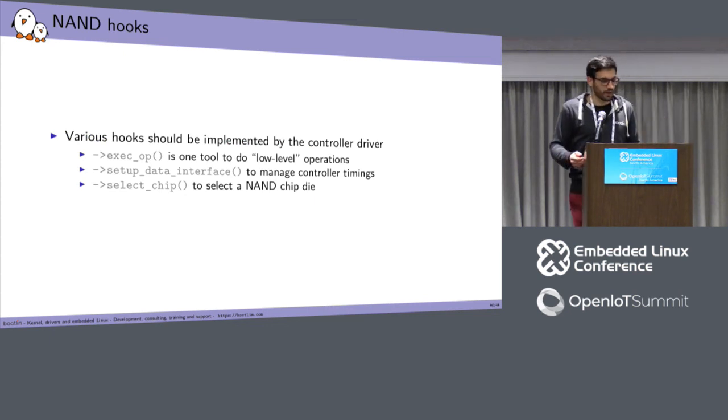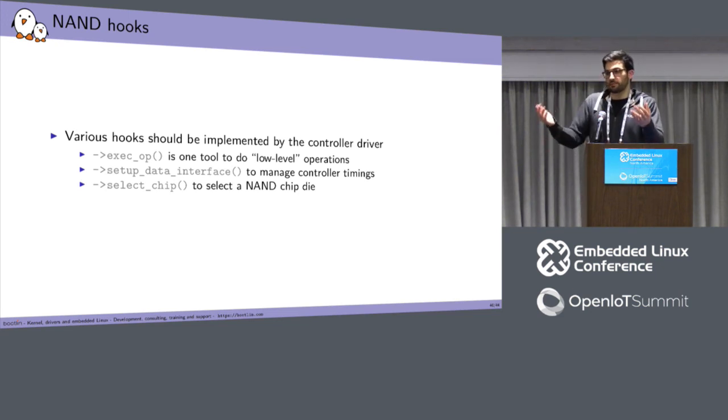So this is how execop is supposed to work. That's all for this interface, but I found it interesting to give you a bit more, at least two other hooks or helpers that you have to implement from your controller driver. So execop is one of them. But you also have the setup_data_interface, which is here to change timings from the controller side, because, of course, you can handle a NAND chip at different speeds, and it's important that both your NAND controller and your NAND chip will run at the same speed. And the last one is select_chip, which is a way to select the NAND die, actually, not the entire chip. And it's, for simple controllers, it will be just the handling of the pin that selects the chip, but you can also maybe change the timings if you have multiple chips in parallel, if you are not using the same timings for all the chips.